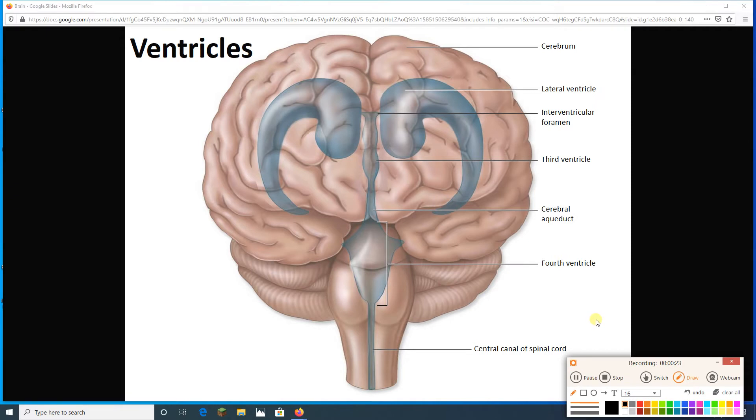A choroid plexus is a special capillary found in each ventricle. Now, here I see all four of my ventricles. I see a lateral ventricle on the right, a lateral ventricle on the left. I see my third ventricle in the middle of the diencephalon there. And I see my fourth ventricle down here, actually between the brainstem and the cerebellum. So these are my four ventricles.